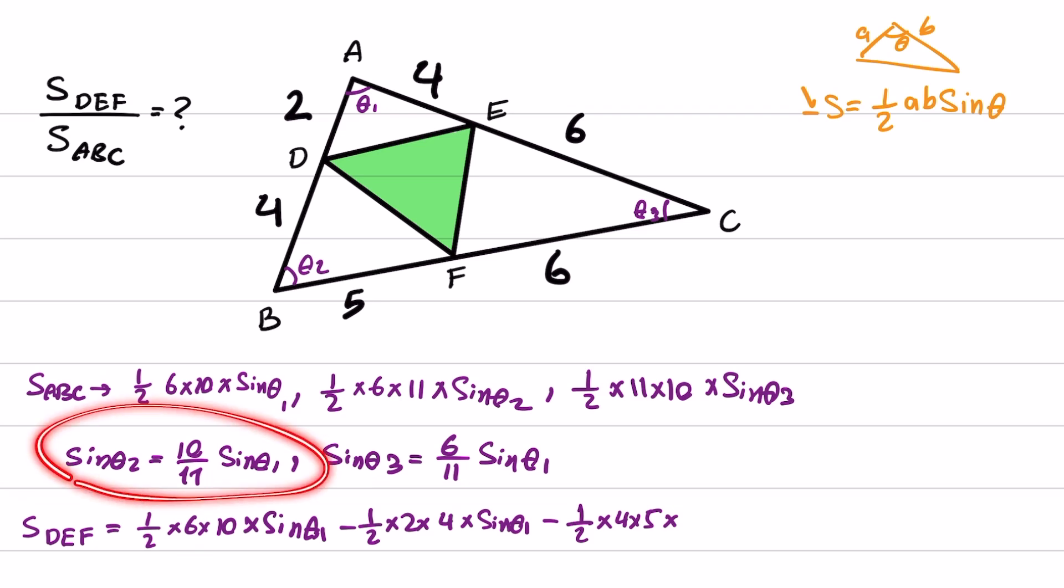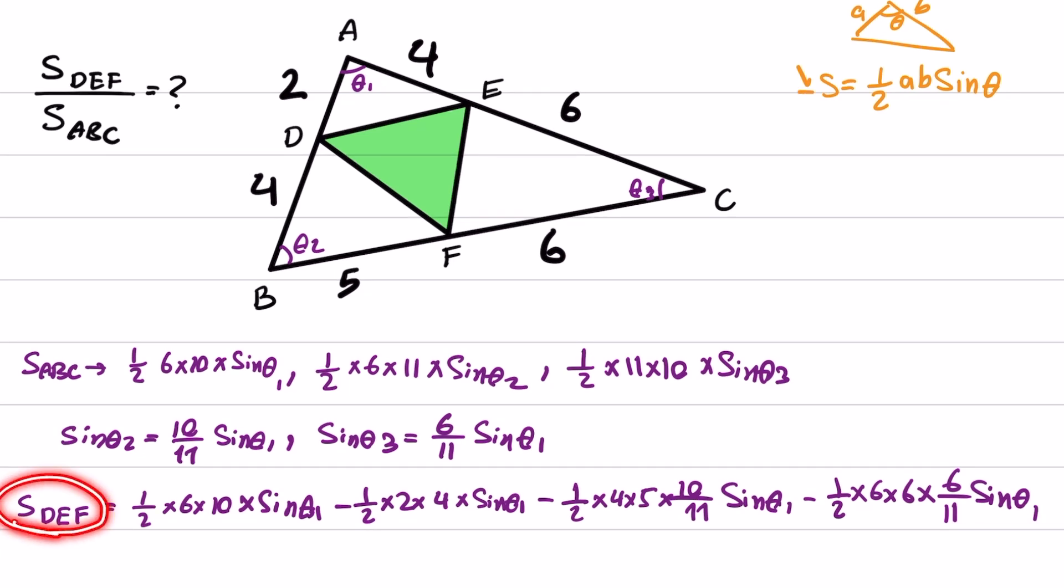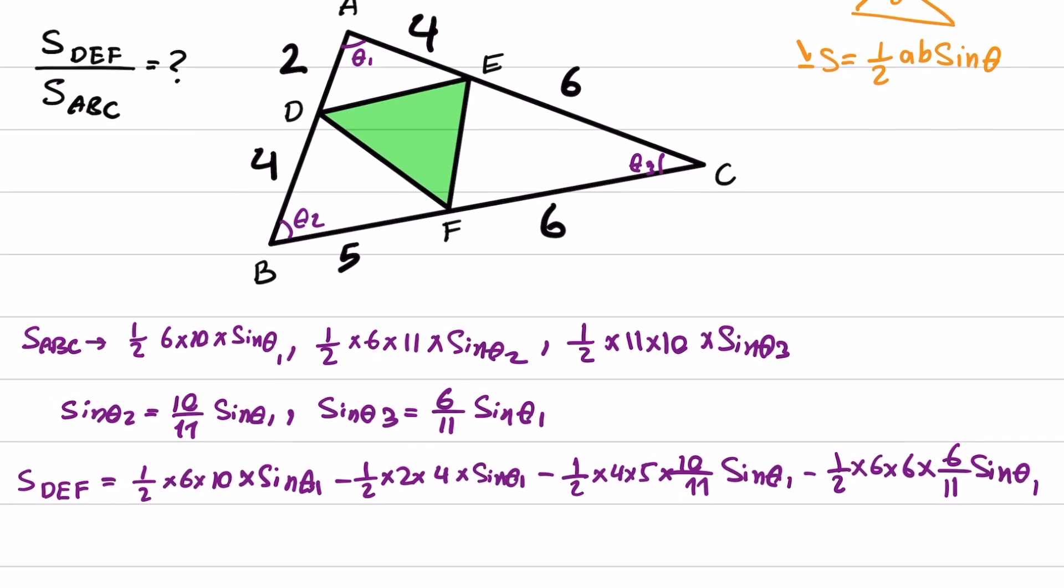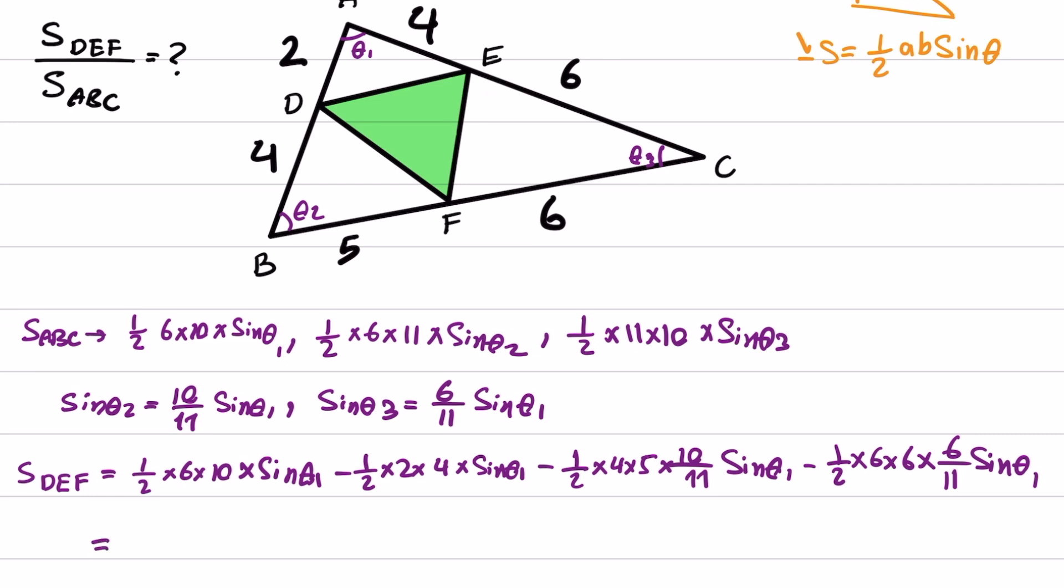And if we replace this, it will become 10/11 sine theta 1 minus area of this triangle, which I can write down as 1/2 times 6 times 6 times sine theta 3. And we know how to write it in terms of sine theta 1. Now all the terms that we have here are based on sine theta 1. And if you simplify this expression, you will have 1/2 times 156/11 times sine theta 1.